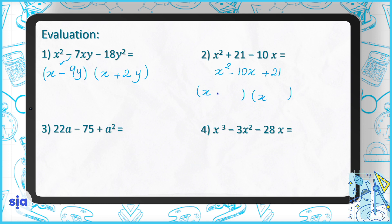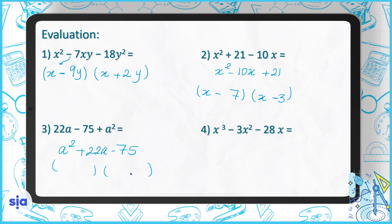Two brackets, x and x, minus and minus. We need two numbers whose sum is 10 and whose product is 21 — they are 7 and 3. Question 3: arrange it first as a squared plus 22a minus 75. We use x and x, and look for two numbers whose difference is 22 and whose product is 75.